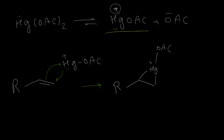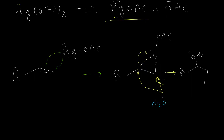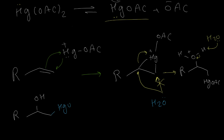This intermediate is very reactive and water can easily attack this ring to open it. There are two possibilities for addition of water, but water always adds to the more substituted carbon. Then this ring opens, and on the more substituted carbon we have OH2 positive, and on the less substituted carbon there is mercury acetate. Another water molecule then removes one of these hydrogens, and we will have OH on the more substituted carbon and mercury acetate on the other.